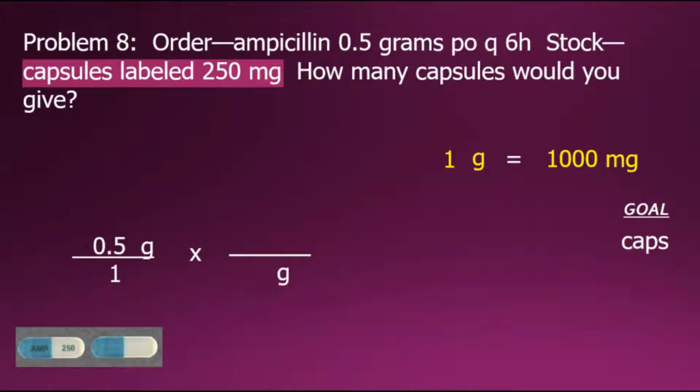There are 3 places between the base unit of grams and milligrams. Three tens, 10 times 10 times 10, gives us 1000 milligrams.